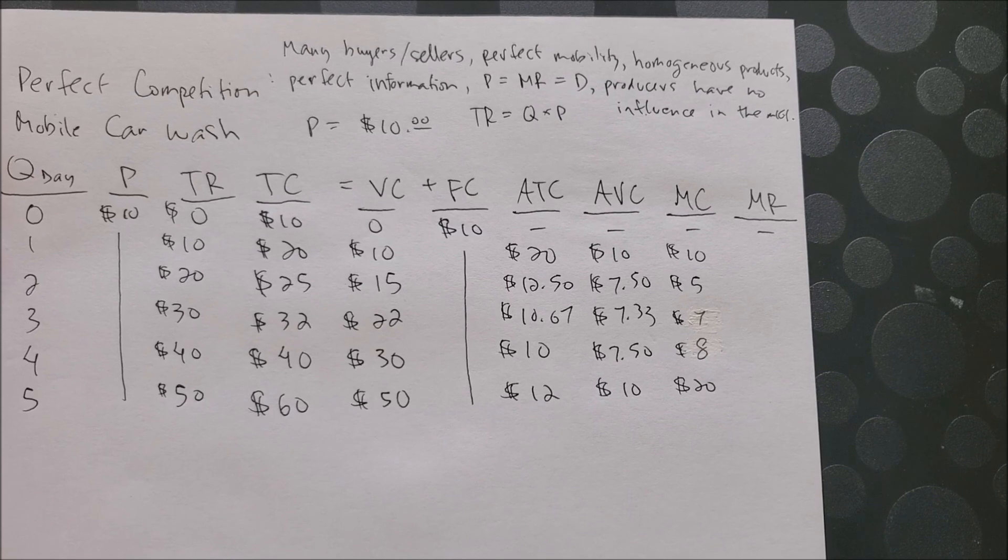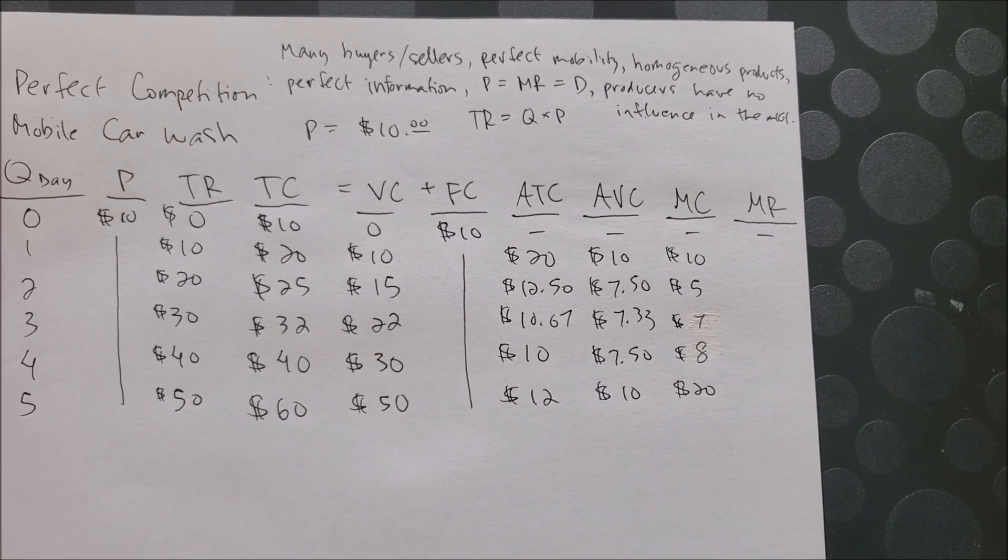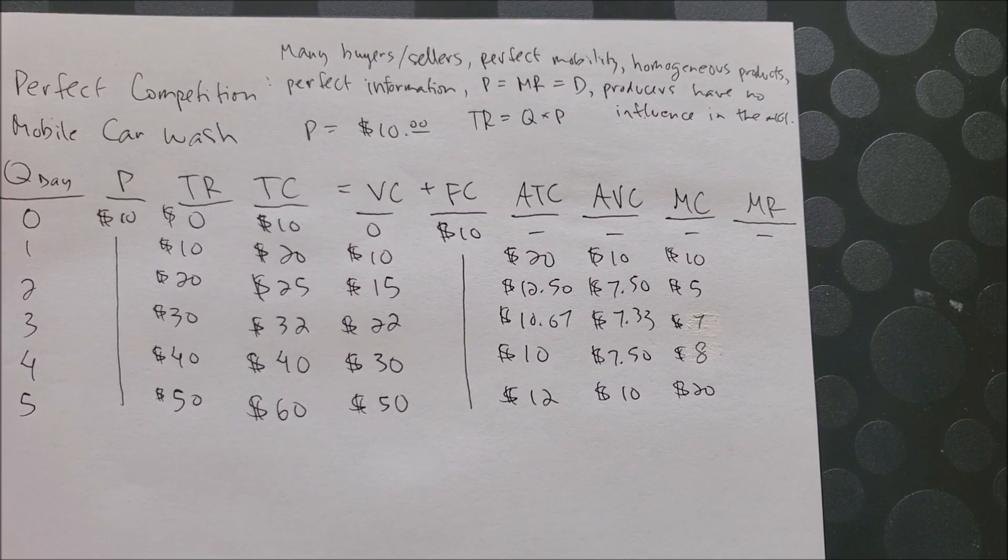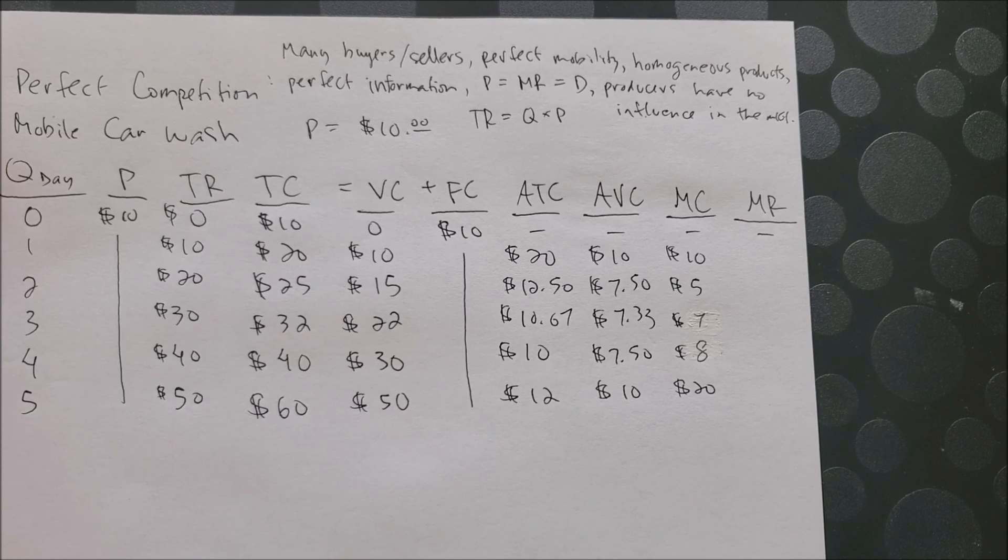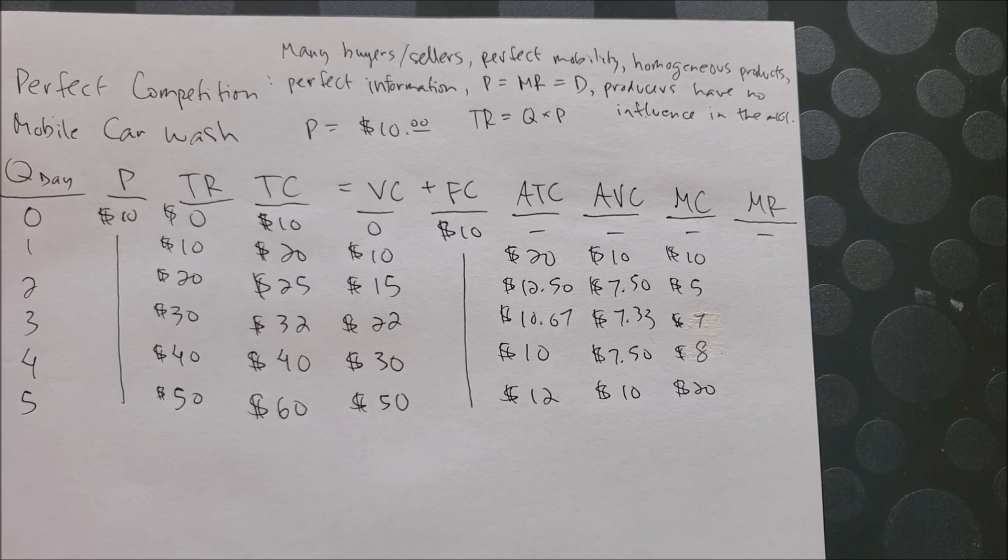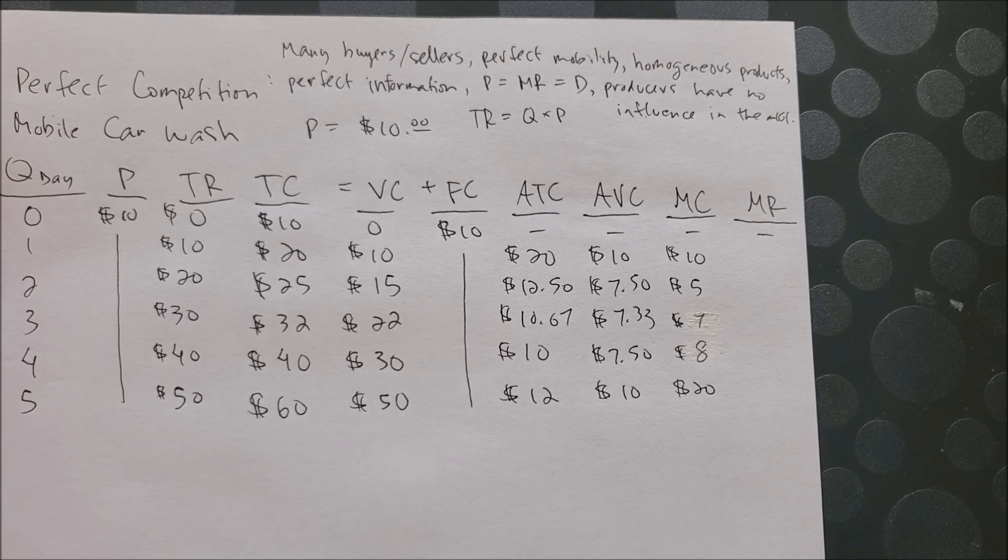Okay, so you should have the following for TR in this column: for zero vehicles you're going to receive in revenue zero dollars, for one vehicle ten dollars, all the way down to five vehicles, fifty dollars in one day.